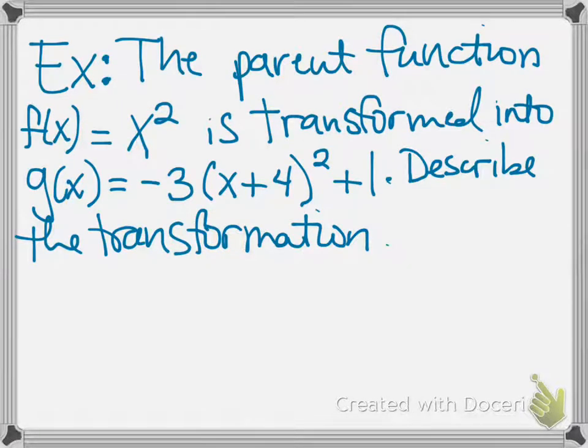So let's do an example. Let's say we have our tried-and-true parent function of y equals x squared, and we're going to transform that into this new function. Notice there are quite a few pieces to this. It says that g of x equals negative three times the quantity x plus four squared plus one. We want to describe this transformation and see what it's going to do to our parent function.